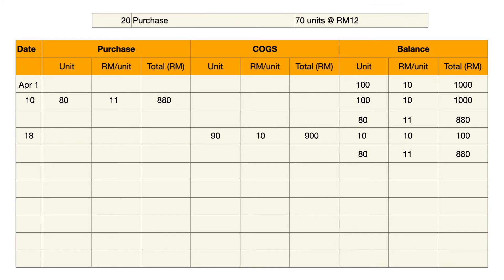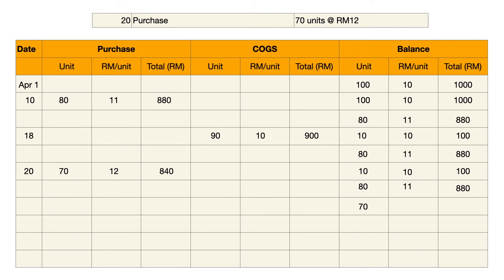Next, we move to the April 20th transaction, which is a purchase. Like what we did before, we write the unit of purchase — 70 units times the related cost of RM12 — and we get RM840. The balance for April 20th is the 10 units times RM10, the 80 units times RM11, and we add the new purchase of 70 units times RM12. So these are all the inventory available for sale on this date — three types of inventory with three different prices.